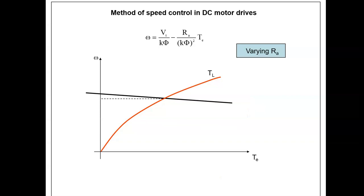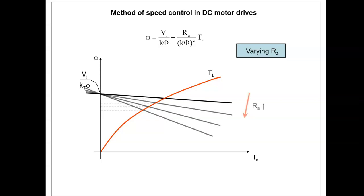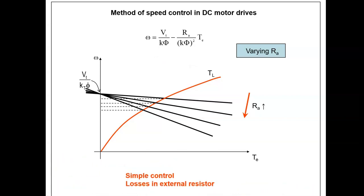The second method is to vary Ra. From the equation, by varying Ra we will change the slope of the speed-torque characteristics. The intersection point between the motor characteristics and the speed axis does not change. Therefore, as we vary Ra we get a different operating speed. The speed range is limited by varying Ra, and furthermore, by inserting external resistance to the armature circuit we are increasing power losses due to I-squared-R. This method gives simple speed control, however the losses are high due to the external resistor.